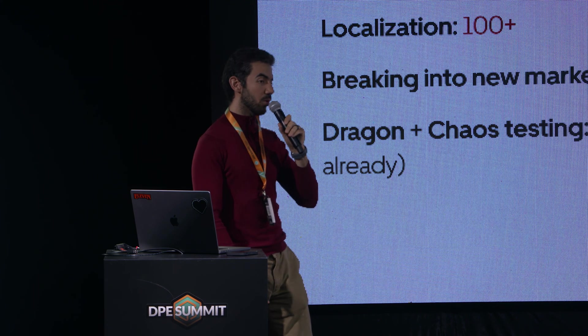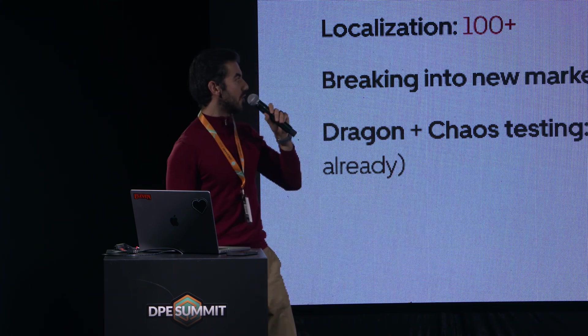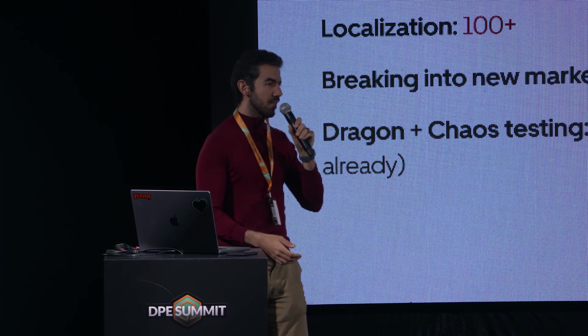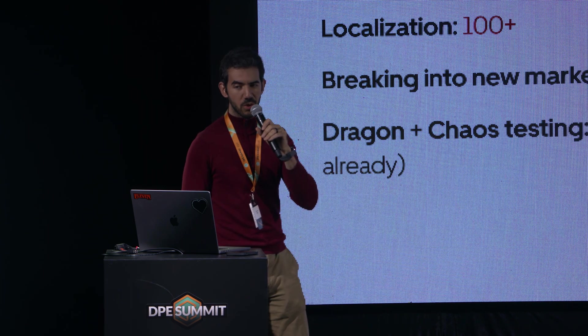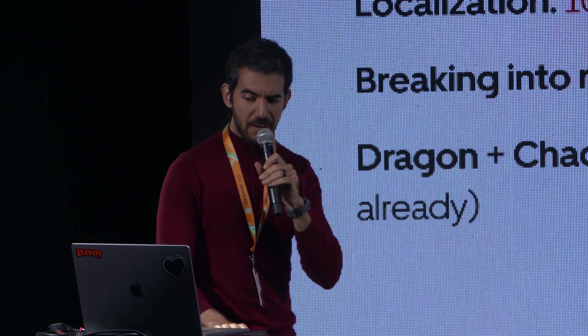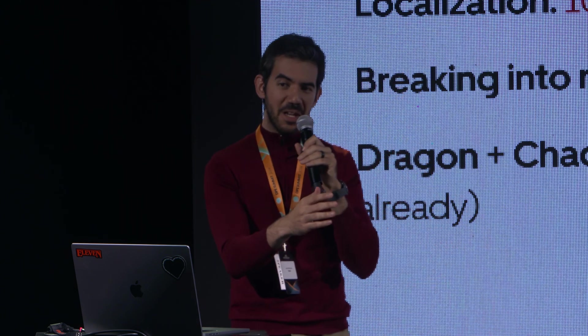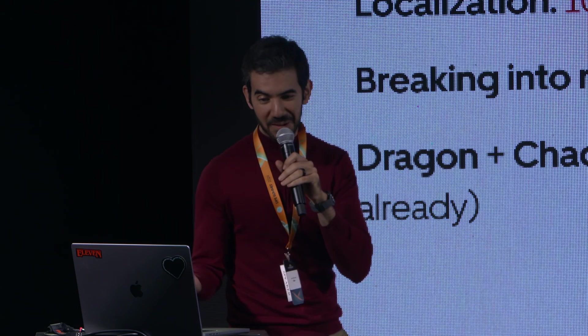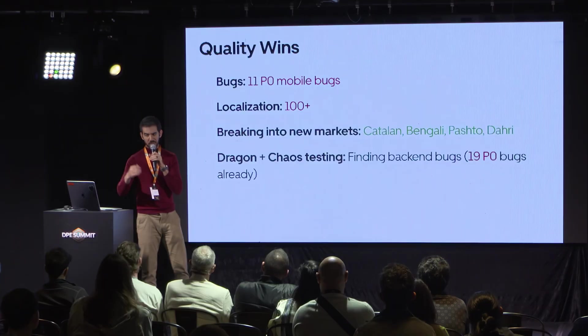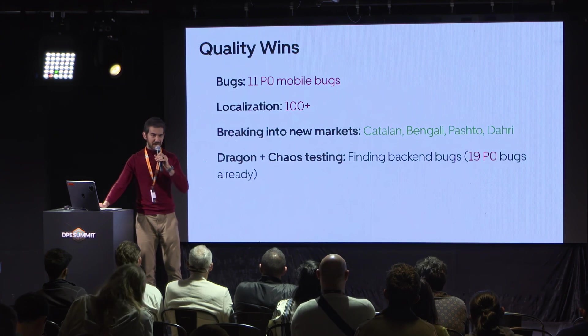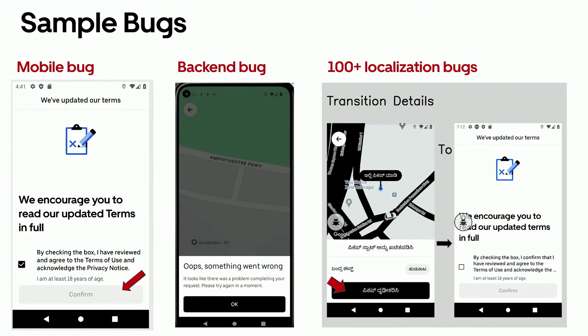Pashto and Dari are particularly close to my heart because we streamlined the launch in those languages during the Afghan refugee crisis to help onboard people as drivers — so in a way, we contributed to ameliorating a humanitarian crisis. We also joined forces with the chaos testing team, where Dragon can inject faults in the backend — minor delays, aborts in unassuming services. We've found 119 bugs of the most destructive kind, each potentially costing two to ten million dollars, and we expect to find more as coverage increases.